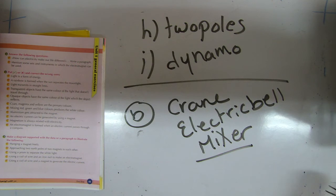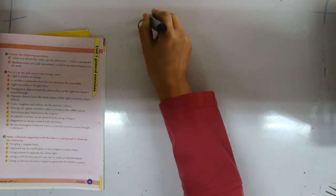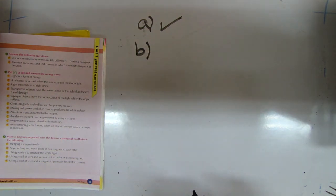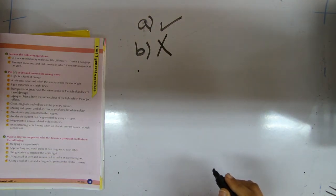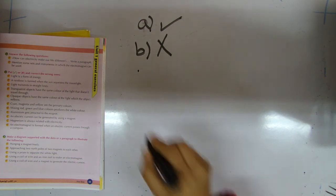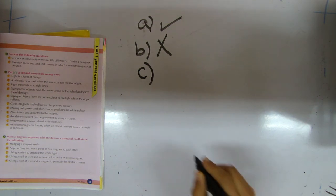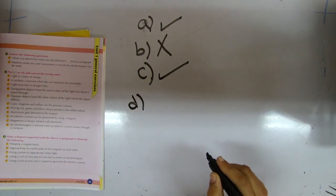Question number four: put right or wrong and correct the wrong one. Number one: light is a form of energy. It's correct. Number two: a rainbow is formed when the sun separates the moonlight. Wrong — the rainbow is formed when the sun separates white light into colors. Number three: light is transmitted in a straight line. Yes, correct. Number four: transparent objects have the same color of light that doesn't travel through. It's wrong.